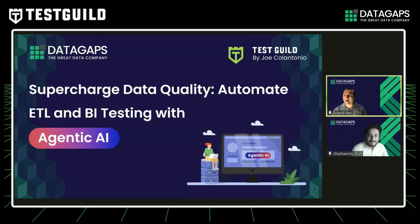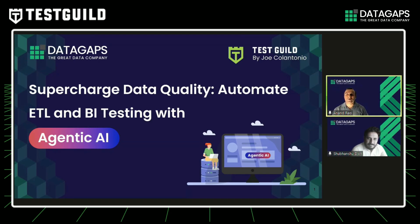My name is Anand Rao. I represent Data Gaps, and I head product marketing here. Today, we're going to be diving into agentic AI and how it's revolutionizing ETL and BI testing, helping organizations such as yours achieve faster, more accurate, and automated QA of data.